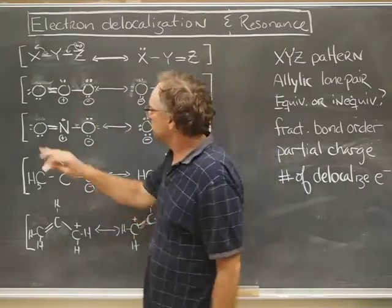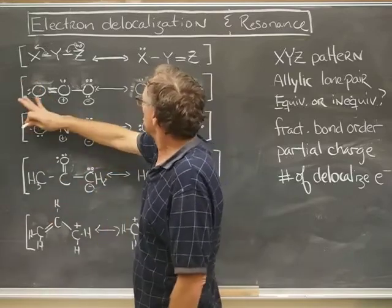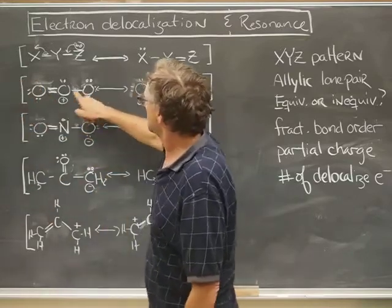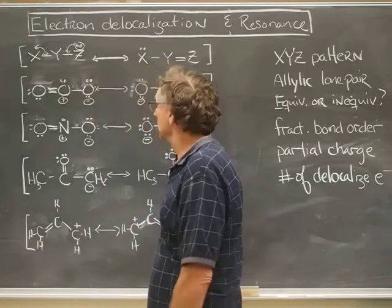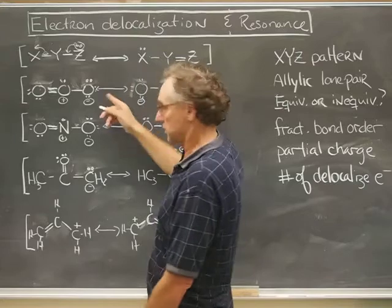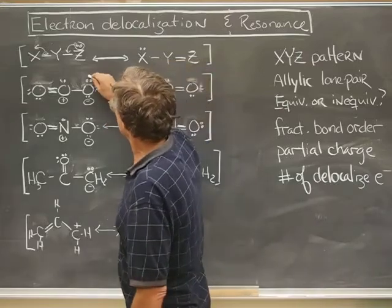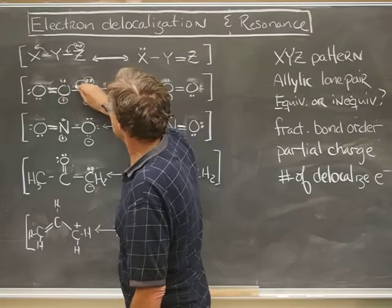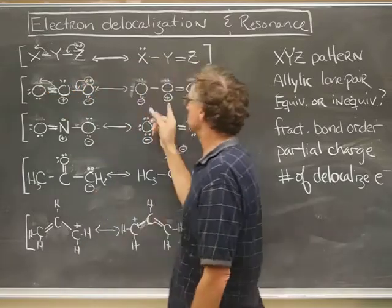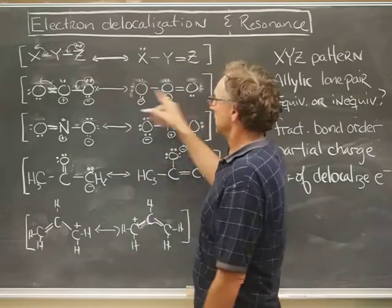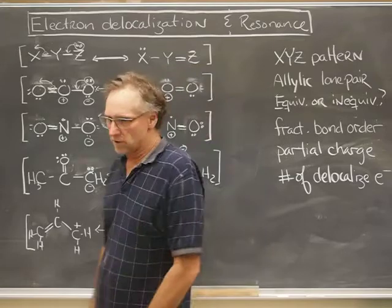So let's do some examples. Here's ozone. Does it satisfy the XYZ pattern? Well I think so. I've got a double bond here, a single bond, and a third atom that's got a lone pair—it actually has three lone pairs. And so I can imagine now this pair of electrons coming down here, that pair of electrons leaving to form a lone pair, and here's that double bond.